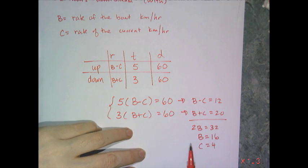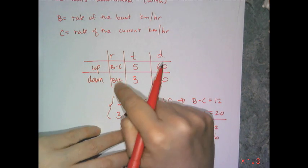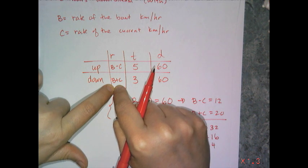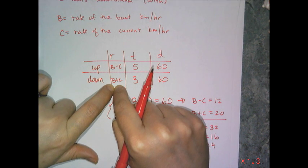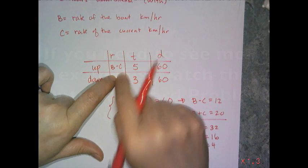So, the key for uniform motion in a current is, you add the current to the still speed for with. And you subtract for against.